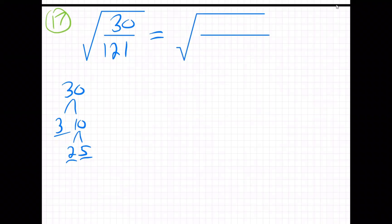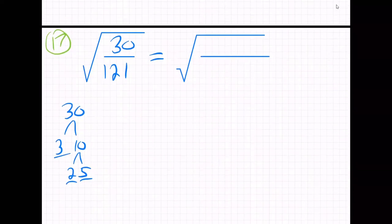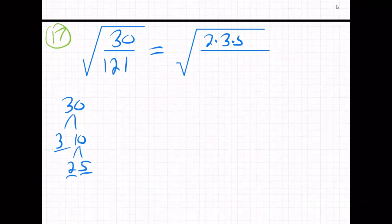The top is just 2, 3, and 5. And the bottom, 121—that's 11 times 11.